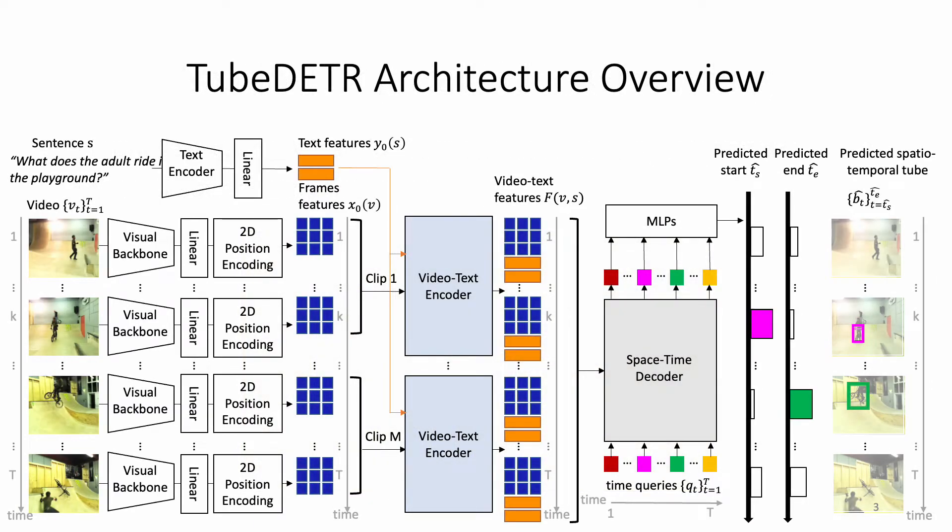In this work, we describe TubeDETR, a novel transformer-based architecture for spatial-temporal video grounding. TubeDETR tackles this task with a space-time decoder that uses the same representations for spatial and temporal localization.